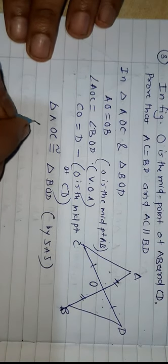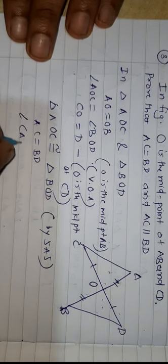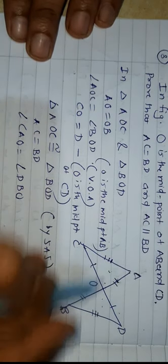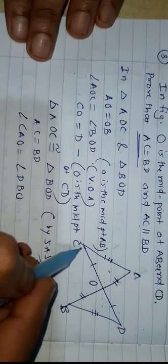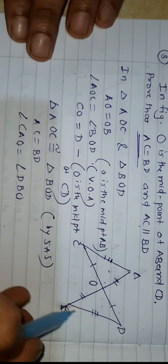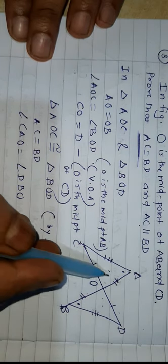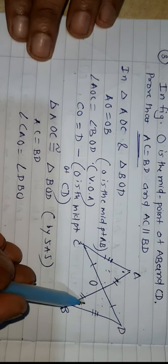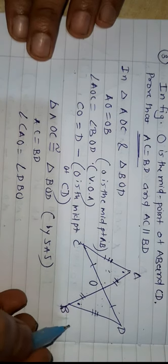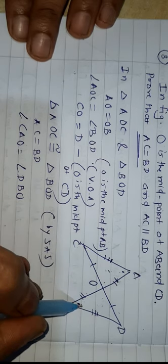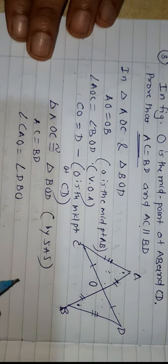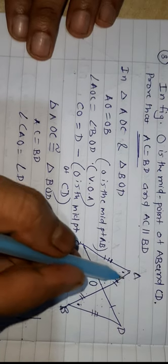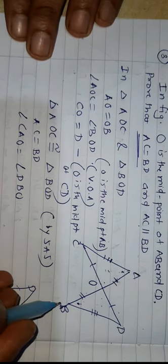If both triangles are congruent, we can say AC is equal to BD, and angle CAO is equal to angle DBO. AC equal to BD proves the first part. Now since angle CAO equals angle DBO, this angle and this angle are equal. If these two angles are equal, we can say AC is parallel to DB — because these are alternate interior angles, and when alternate interior angles are equal, the lines are parallel.